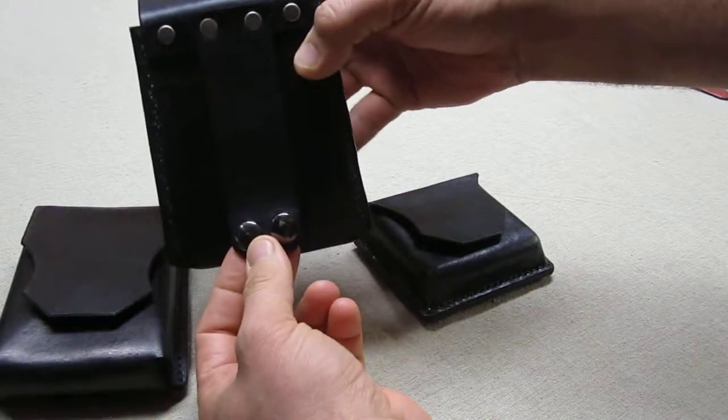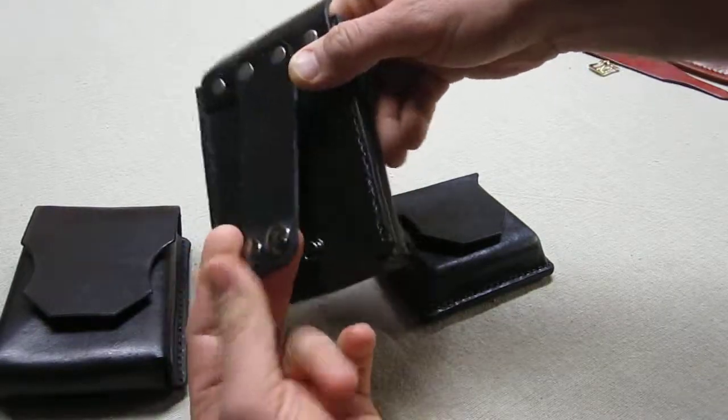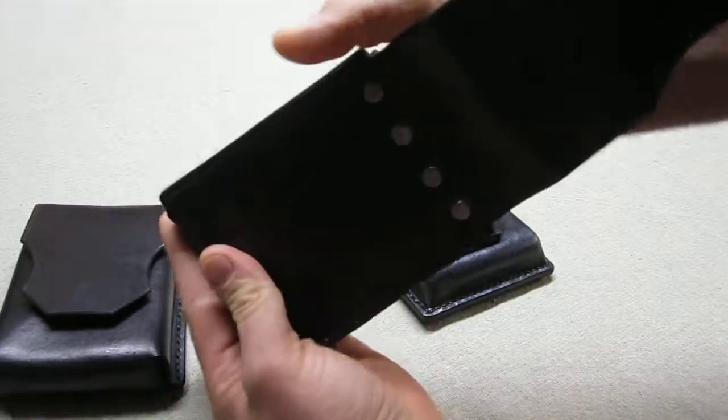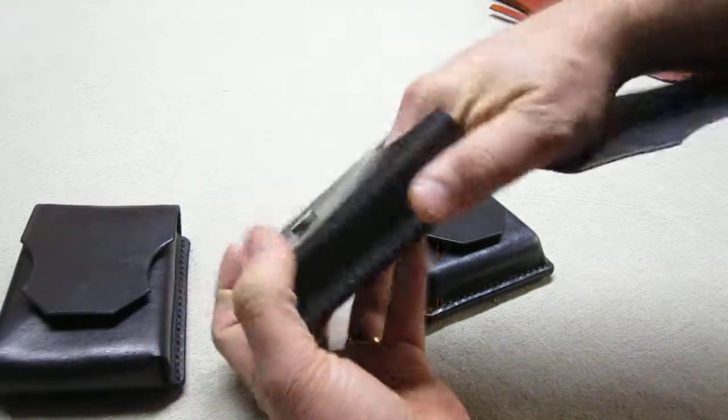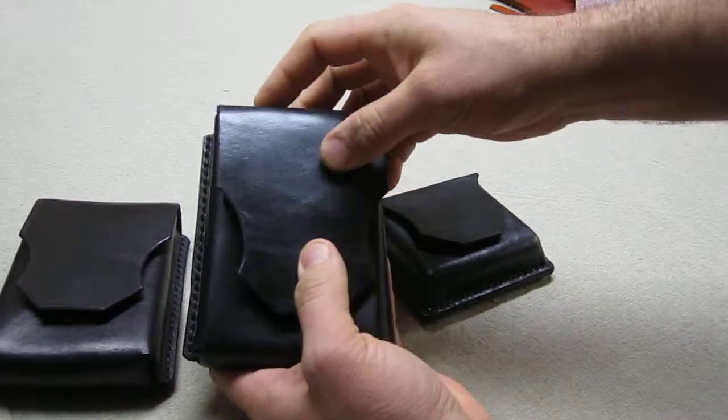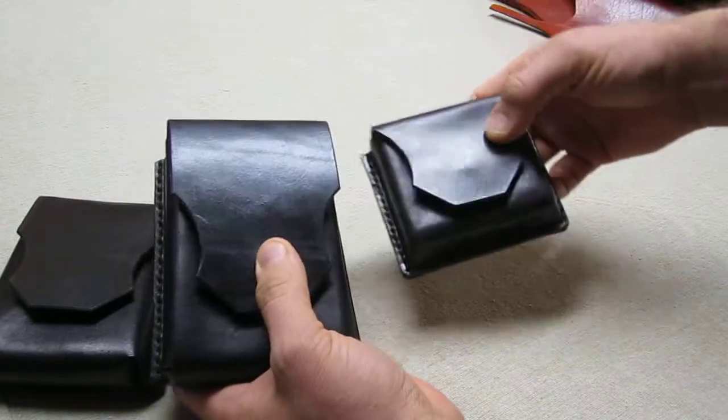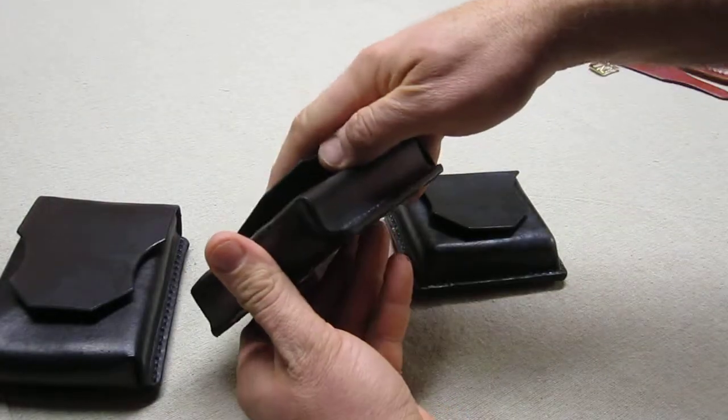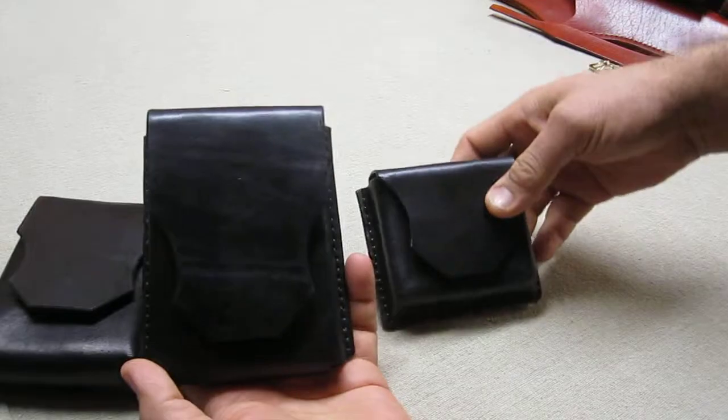These ones, the belt loop snaps on at the top the same as the other, and that makes it easier to get it on and off your belt without having to undo the whole belt. Just snap that on. These ones, the large ones will be $50, the smaller one will be $40. I can make any size or shape you want, any color you want, any style the flap.